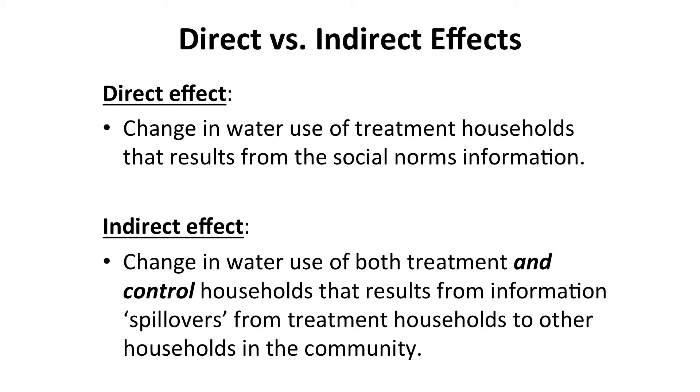In this experiment, there are two ways that households may obtain information about neighbors' water use. The first is from the information included in the treatment household's water bills — this is termed the direct effect of the information treatment. The second is that treatment households may talk to neighbors about the information they receive, so even if a household is not part of the treatment group, it may receive information from a neighbor that does. Also, a treatment household may receive additional information from a neighbor who wants to discuss what they've heard about social norms. This is termed an indirect or spillover effect. The research team tried to estimate both the direct and indirect effects.